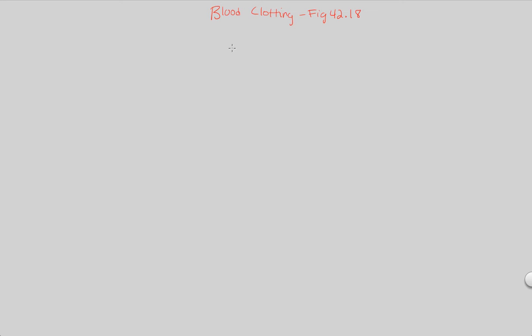Blood clotting is a very important process within any individual that has a circulatory system. You want to make sure that the blood within the circulatory system stays within the circulatory system — you don't want blood leaving that area. There are two major steps to this process, and one will happen before the other.